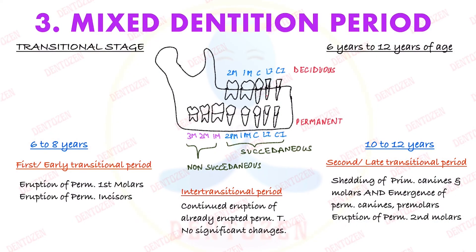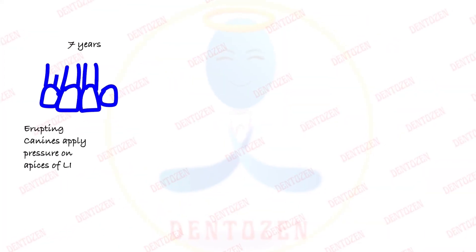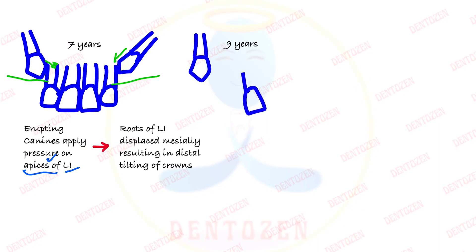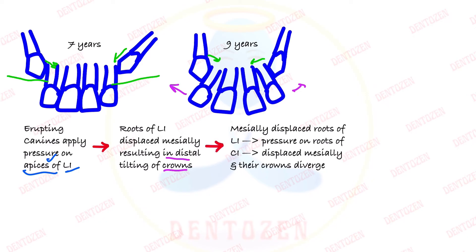Now we come to the inter-transitional period. Not much is happening here, but the permanent canines which are going to erupt in the second phase have already started their journey. Though they are inside the bone, they start applying pressure on the apices of the roots of the lateral incisors. Because of this, the lateral incisor roots turn in the mesial direction, and their crowns go in the distal direction. These lateral incisors in turn put pressure on the roots of the central incisor, so the central incisor crowns also go in the distal direction.